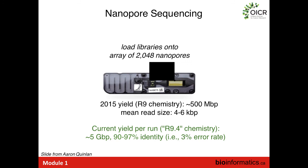Here's what a nanopore sequencer looks like. This is the flow cell — this is the port you use to pipette the sample in. This is the array of nanopores: there are 2,048 nanopores that can individually sequence a fragment of DNA, though they can only sequence in groups of 500 at a time.